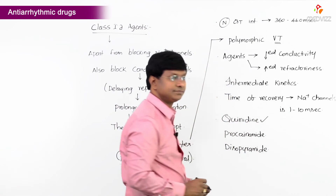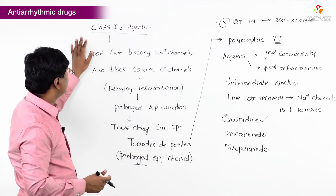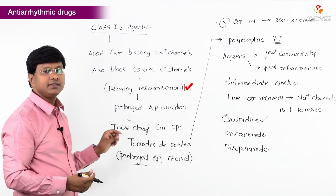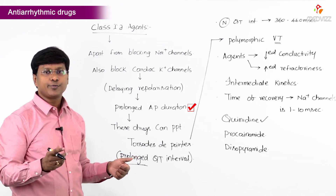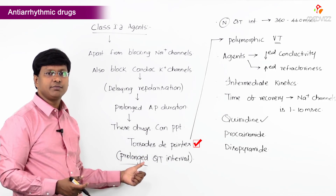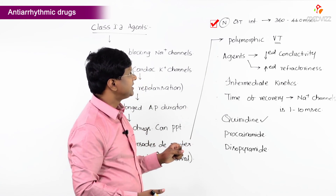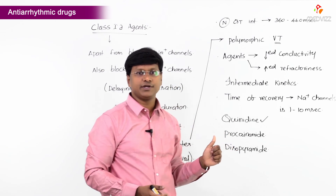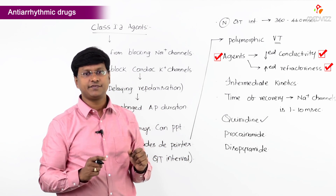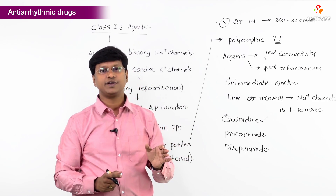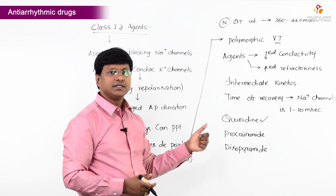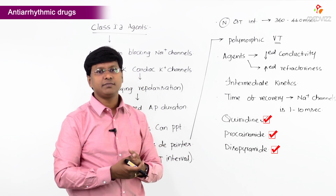Before discussing quinidine, let me briefly revise. Class 1A agents block both sodium and cardiac potassium channels, delaying repolarization and resulting in prolonged action potential duration. This can precipitate Torsades de Pointes, represented on the ECG by a prolonged QT interval (normal: 360–440ms). Torsades de Pointes is polymorphic ventricular tachycardia. These agents also cause decreased conductivity and increased refractoriness, dissociate with intermediate kinetics (recovery time 1–10ms), and include quinidine, procainamide, and disopyramide.